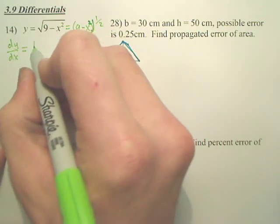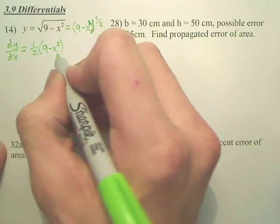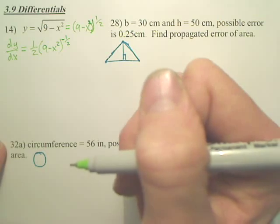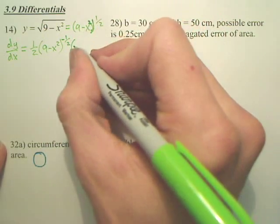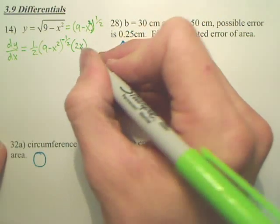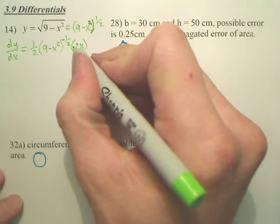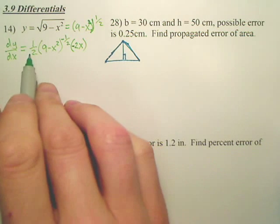Bring the 1 half out front, we need to derive it, it's a chain rule. 9 minus x squared, put negative 1 half, and then we derive the inside. Derivative of the inside looks like positive 2x. No, actually, you're right, negative 2x. Okay, that's my derivative.